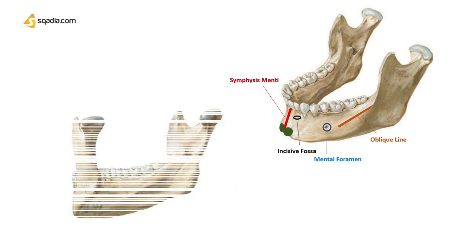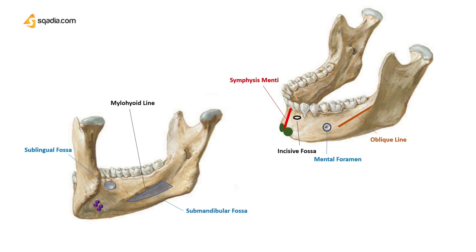Now let's rotate the mandible and look closely at the inner surface. Here we look for the mylohyoid line, starting from the third molar up to the genial tubercles, which are bony projections. Just below the mylohyoid line is the submandibular fossa, which accommodates the submandibular gland, and above it is the sublingual fossa, which houses the sublingual gland. Remember these features, as they should flash up in your mind during examinations.